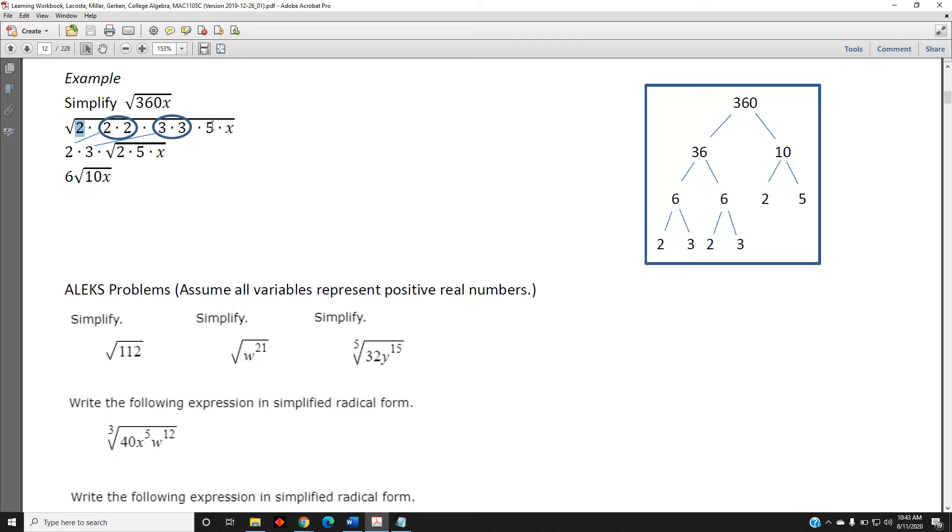But this 2 does not have a match. This 5 does not have a match. And this x does not have a match. So those stay under the radical.